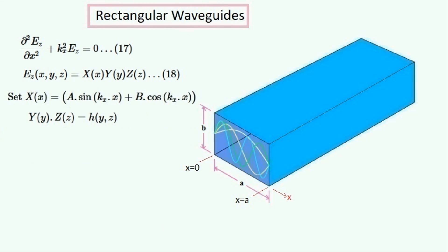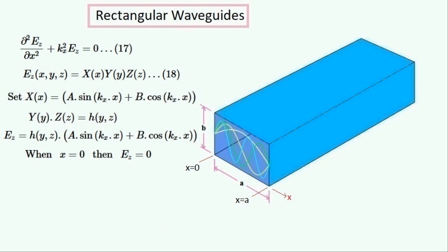The other two functions may be coupled into a single function H and so be ignored for now. This is what EZ is now equal to. The field EZ is equal to zero when X is equal to zero, that is when it is at the left-hand wall. Therefore it must be a sine function, since if a cosine term was present then EZ would never be zero at the wall.